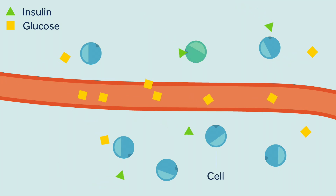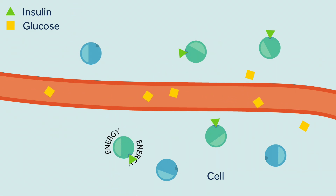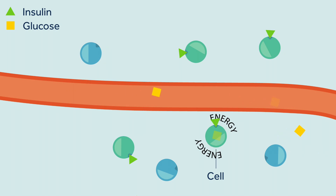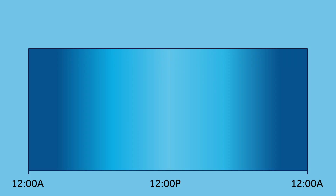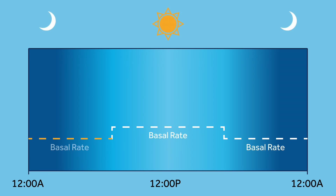Basal insulin is needed 24 hours a day, between meals and during the night, to move glucose into cells and provide energy the body needs. The pump delivers small amounts of insulin throughout each hour of the day and night. The amount of basal insulin needed each hour is entered as a basal rate.